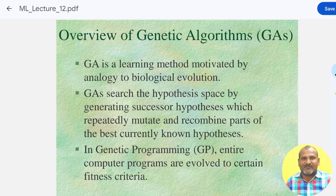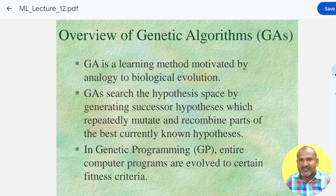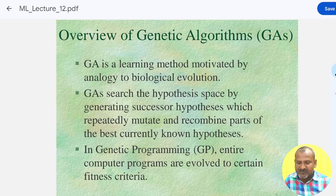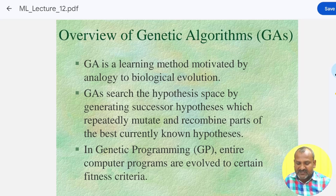Welcome. Today we will discuss one of the important topics in machine learning which is part of unit 4 — the topic is genetic algorithms. Genetic algorithm is a learning method motivated by analogy to biological evolution. Genetic algorithms search the hypothesis space by generating successor hypotheses which repeatedly mutate and recombine parts of the best currently known hypothesis.